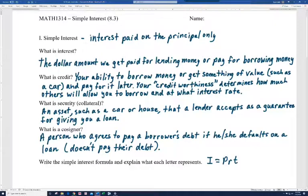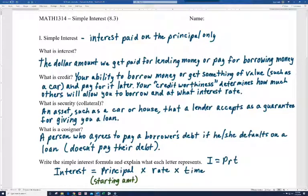It's I equals PRT. So I is for interest. P is for principal, which is the starting amount. R is the interest rate, which is normally written as a decimal. And then the time is normally in years, unless it's stated otherwise. All right. Let's go on to the next slide.